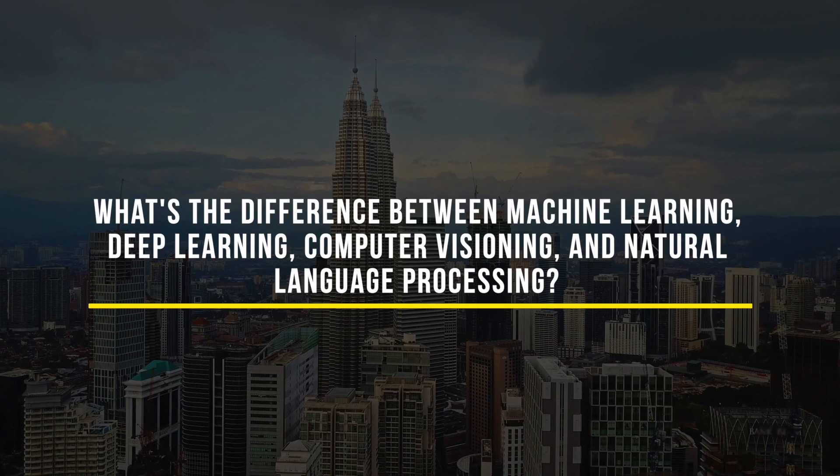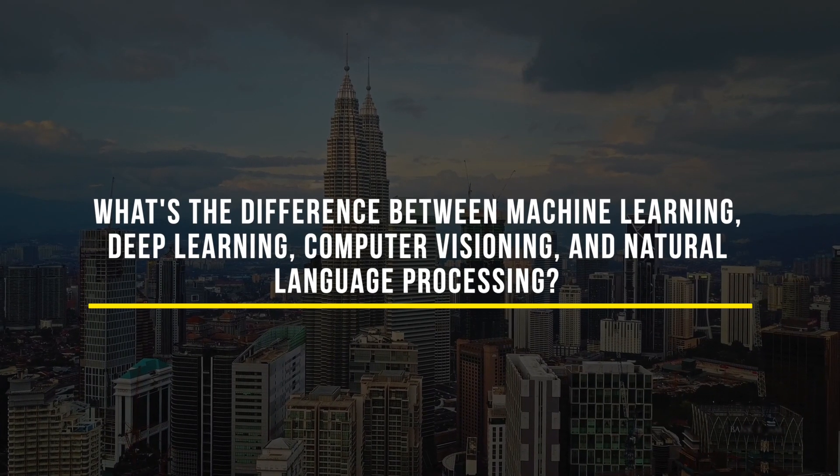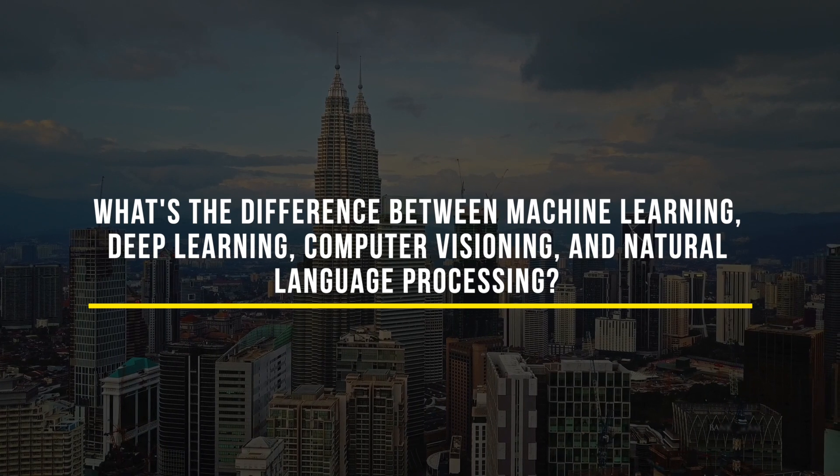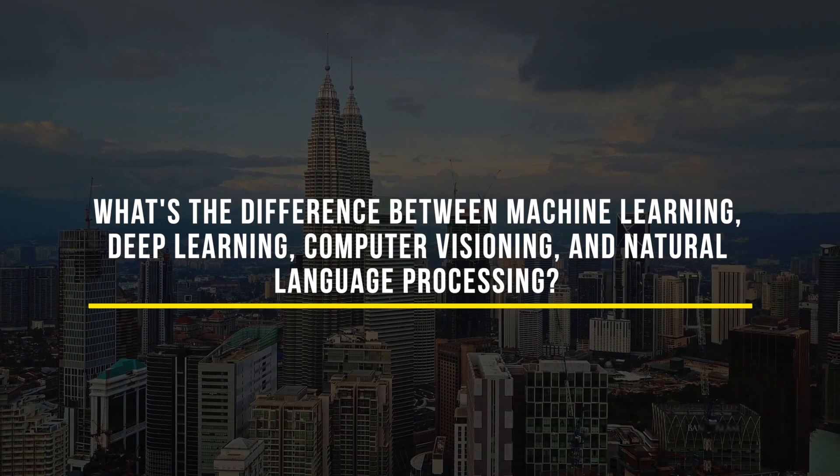And then machine learning, as I mentioned, is really that specific implementation of how you do it. Let's take a look at some of the other commonly used forms. Can you explain the difference between machine learning, deep learning, computer vision, and natural language processing?